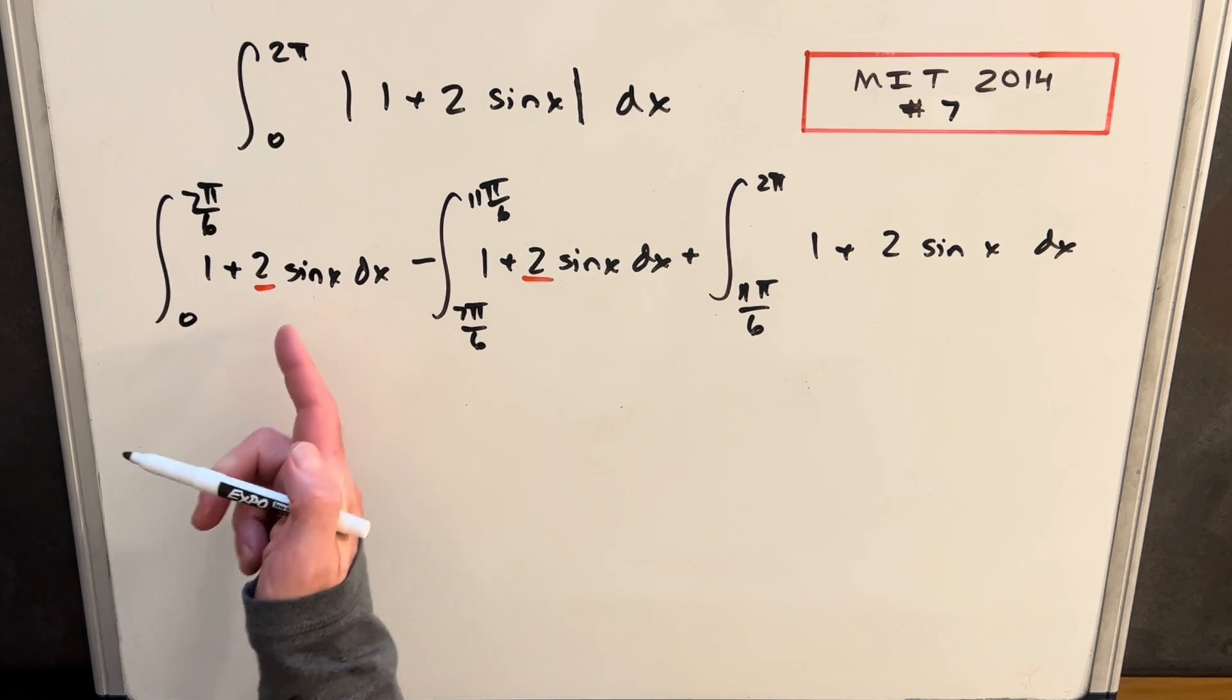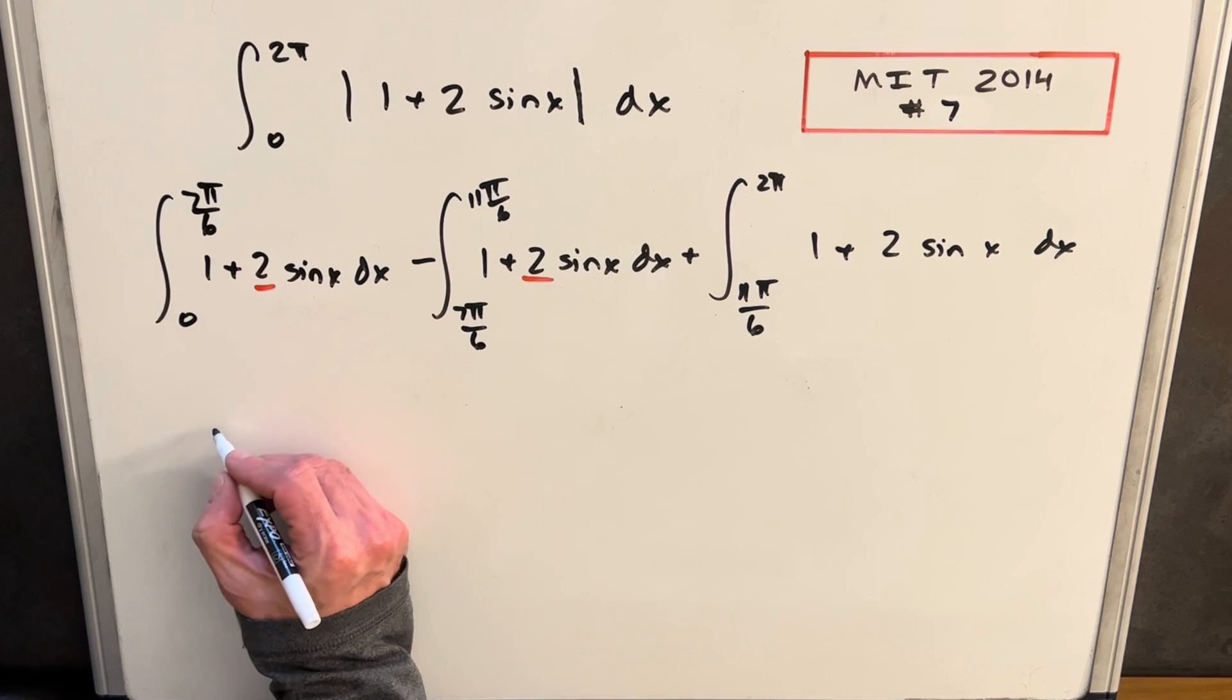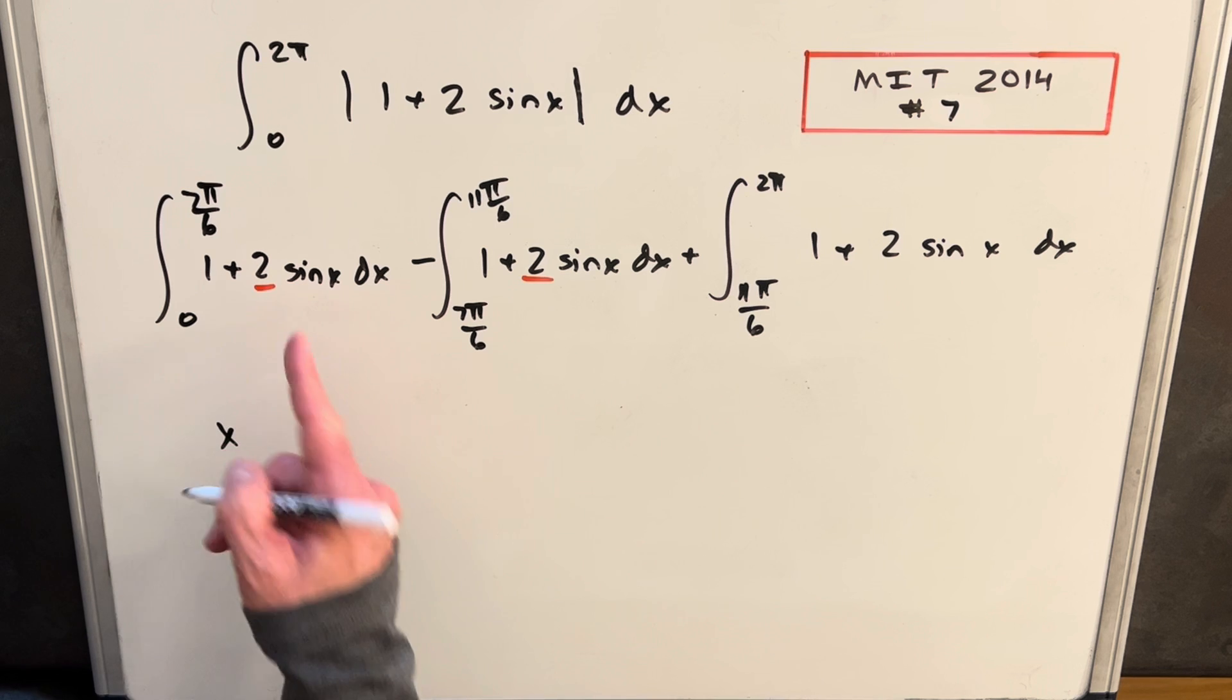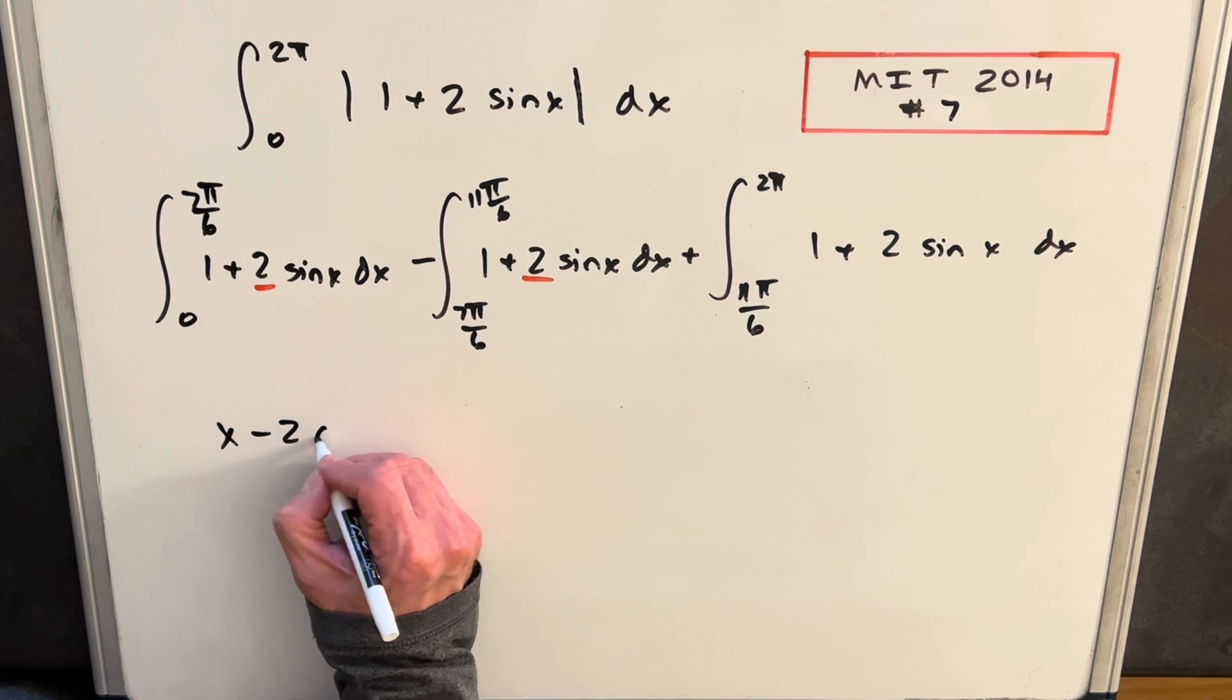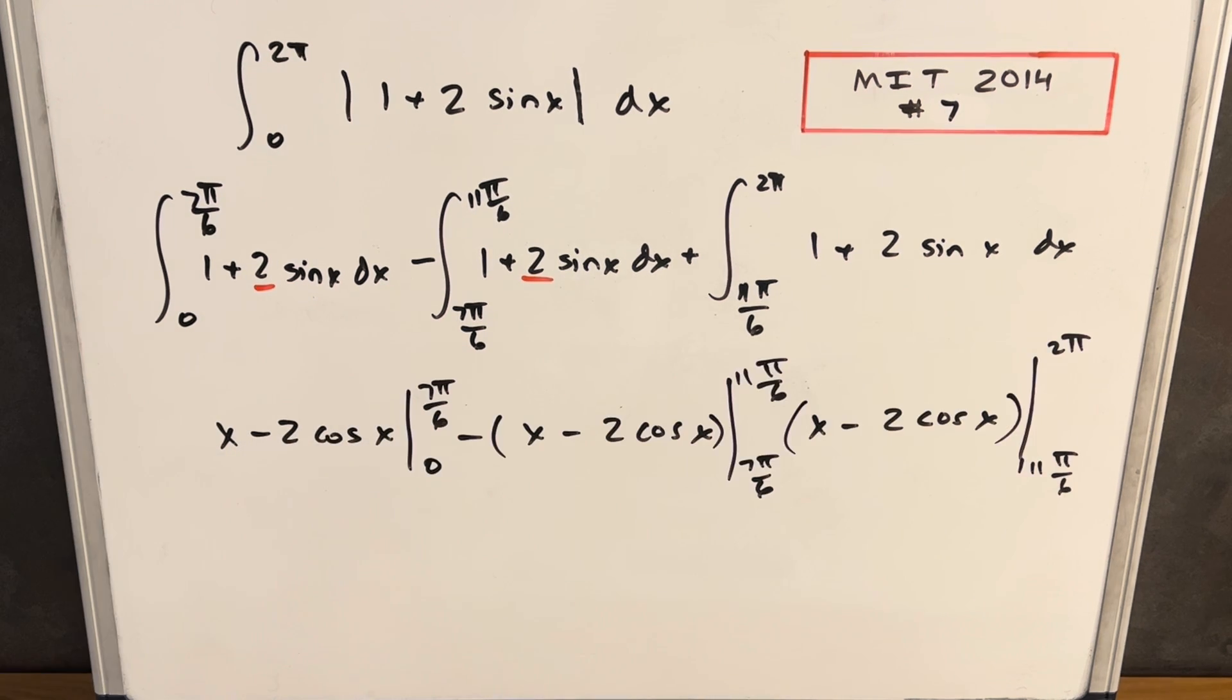Okay, and next we just want to integrate this thing. So we'll integrate 1, we're going to have an x. Integrating 2 sine x is just going to be a minus 2 cos x. And actually what I found was the most tricky part of this whole integral was just evaluating these bounds without making a mistake. So let me do this carefully.